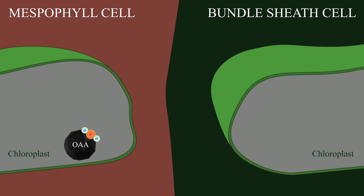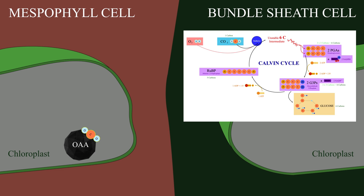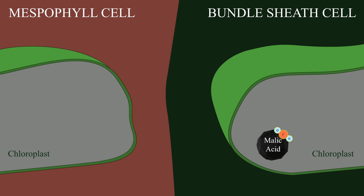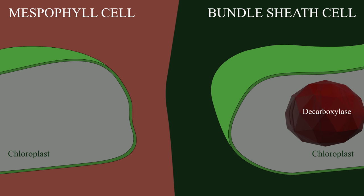This is the first stable compound in the pathway. It has four carbons, and this is why this pathway is called the C4 cycle. You may recall that the first stable compound in the C3, or Calvin cycle, is three carbons. Next, the reducing agent NADPH2 comes in and reduces OAA to malic acid. Malic acid then travels to the chloroplast of the bundle sheath cell, where a decarboxylase removes the CO2.